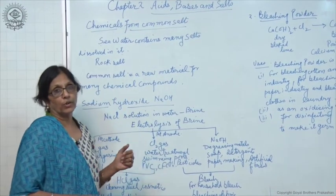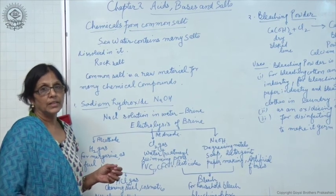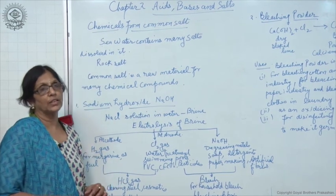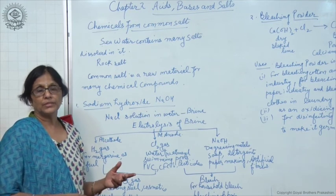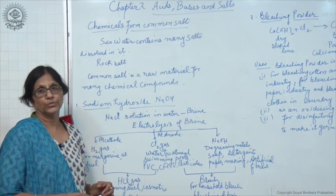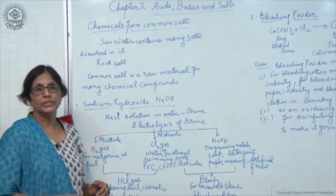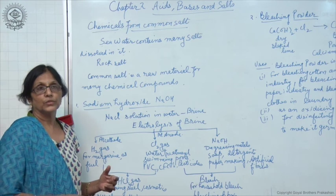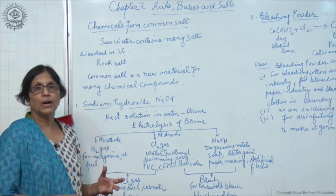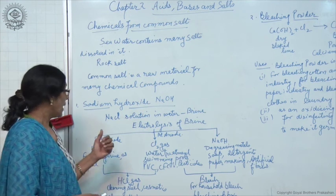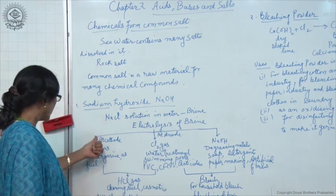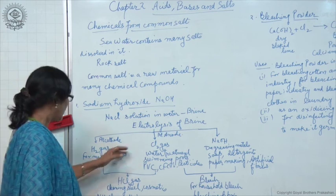When common salt is dissolved in water, its solution is called brine. When it is electrolyzed by passing electric current, it dissociates into sodium ions and chlorine ions. Sodium ions are deposited at cathode and chloride ions are deposited at anode, where it forms chlorine gas. Chlorine gas liberates at anode and sodium ions liberate at cathode, where on combining with water, they form sodium hydroxide and hydrogen gas.